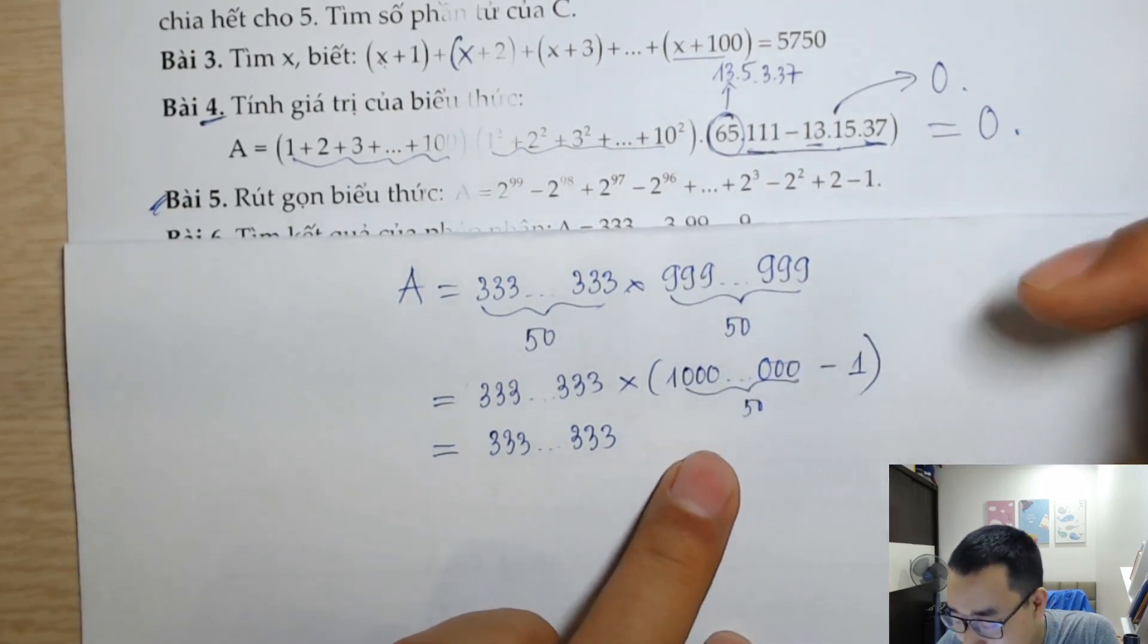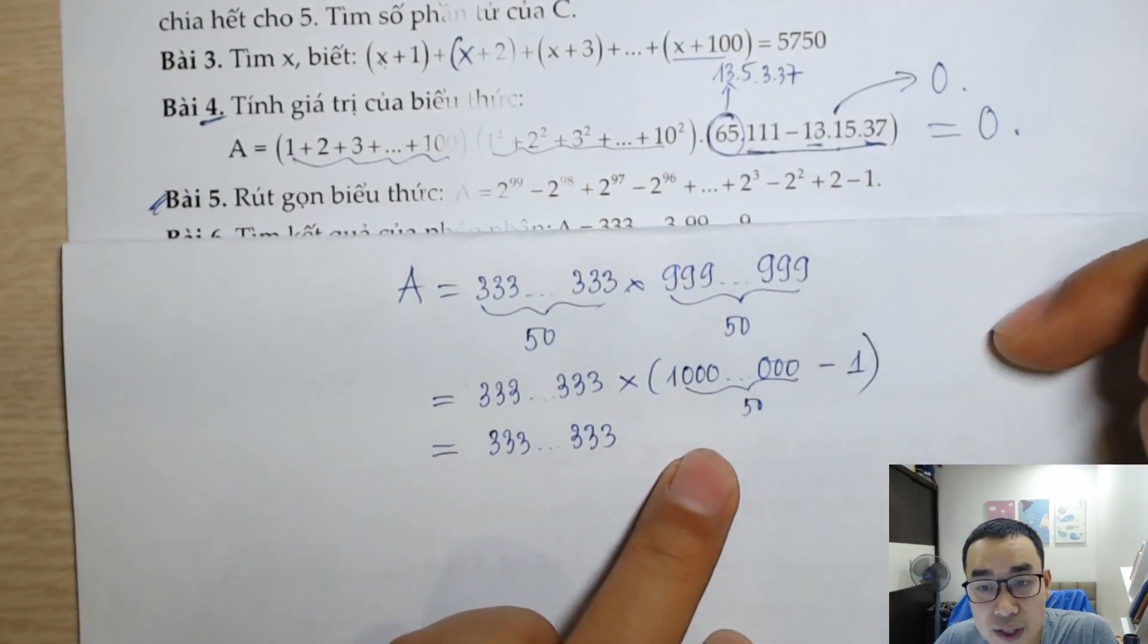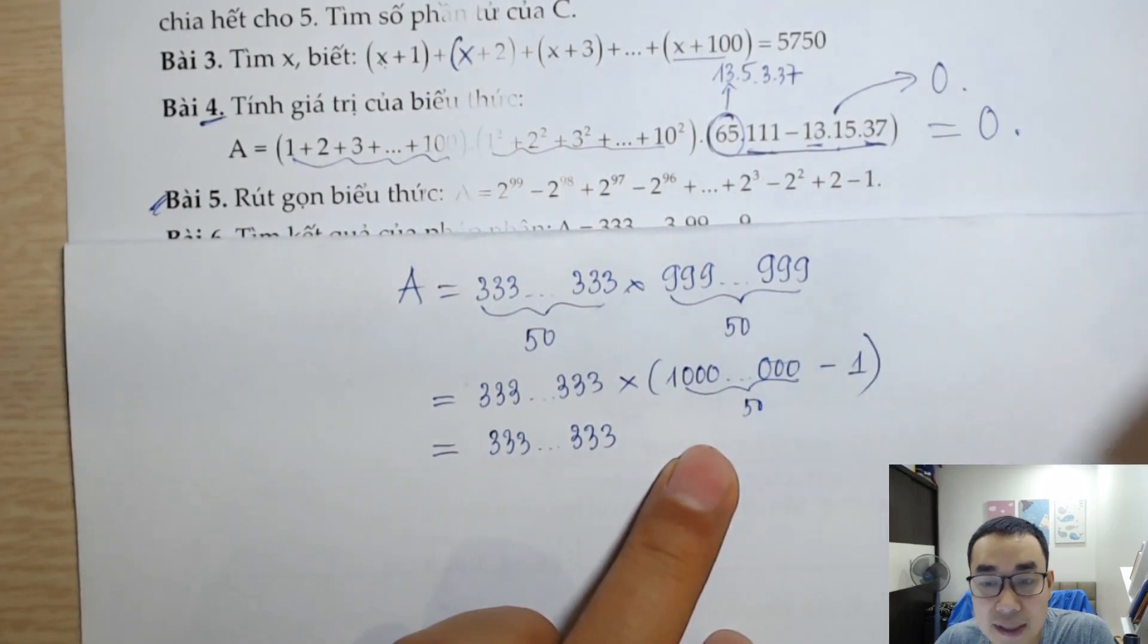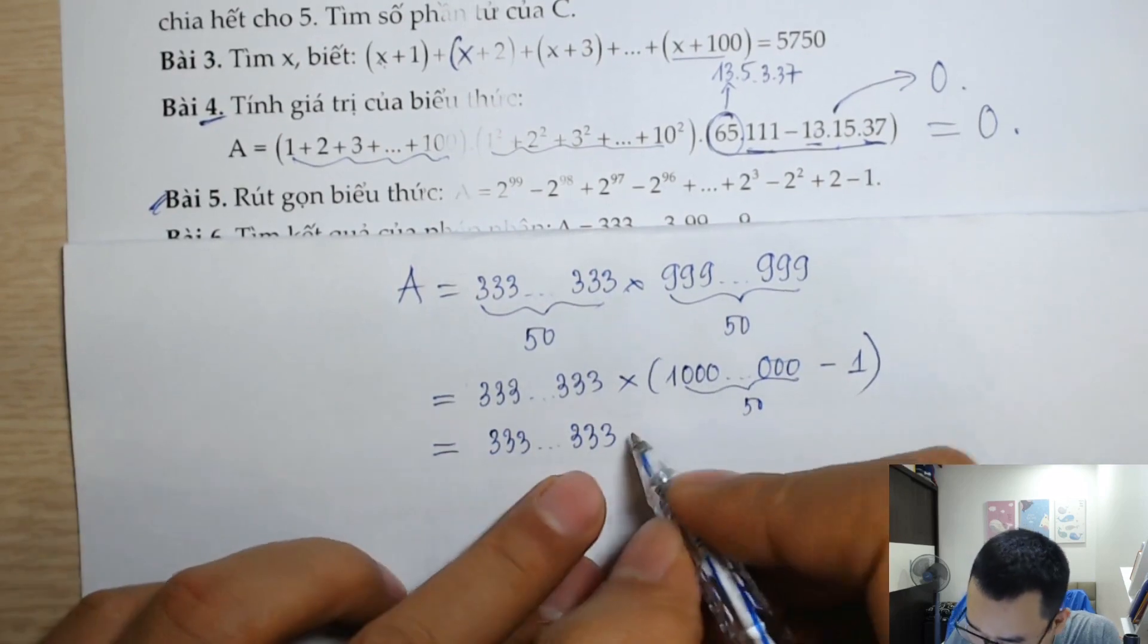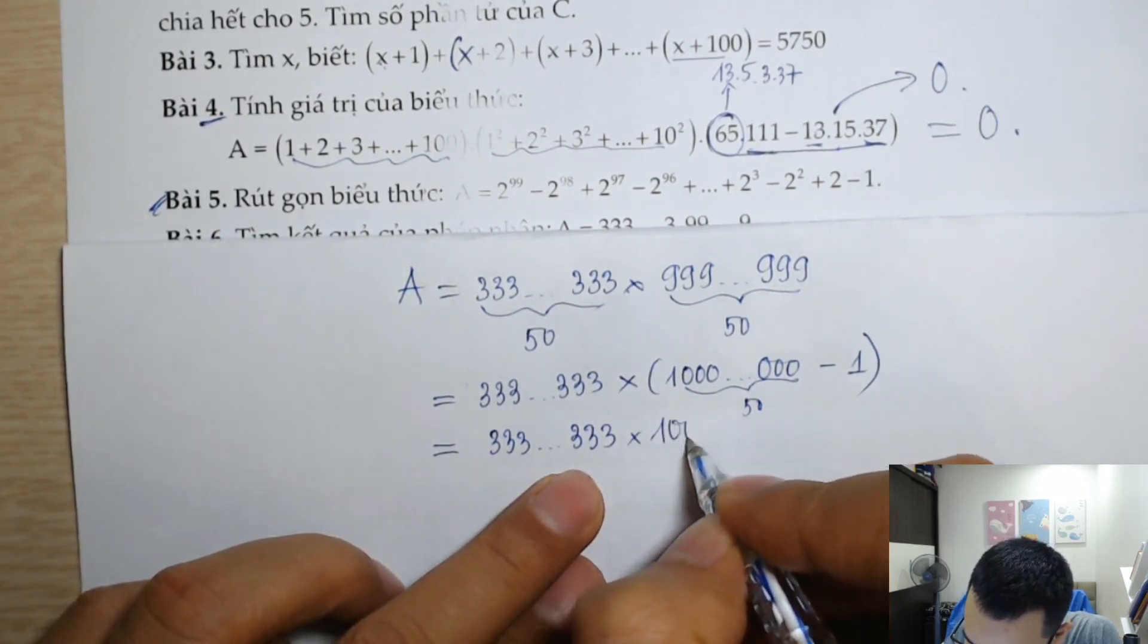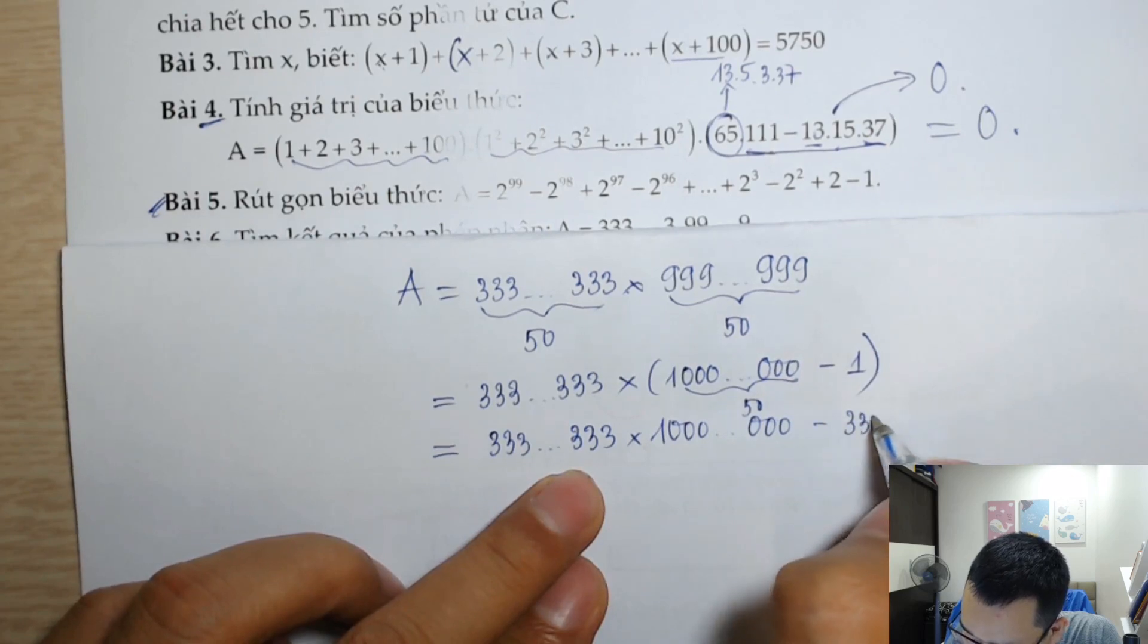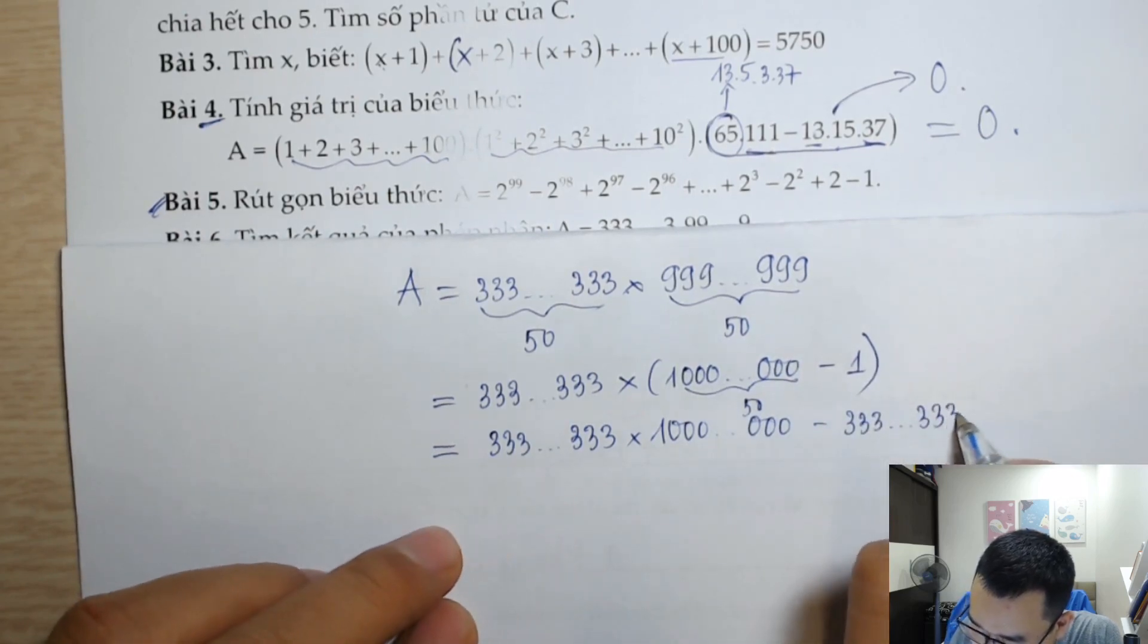Ví dụ như là 1 chữ số 9 thì nó bằng 10 chỉ 1, tức là 1 chữ số 0. 2 chữ số 9 là 99, thì sẽ bằng 100 chỉ 1 là 2 chữ số 0. Vậy chỗ này 50 chữ số 0. Vậy, nhân với 1000...000, trừ đi 333...333.